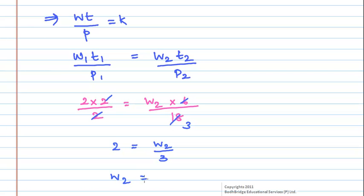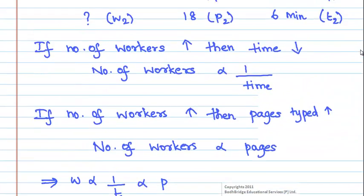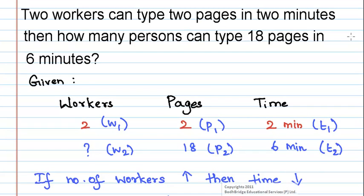Therefore, w2 is equal to 6 which means that number of workers is equal to 6. Hence, we can say that 6 workers can type 18 pages in 6 minutes.